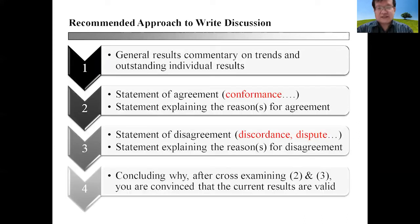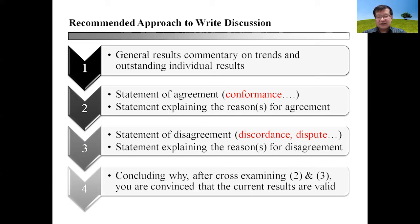So how do you write a discussion? This is a trial-and-tested method for students to write a discussion. There are four steps. The first step will be a general results commentary on trends and outstanding individual results. Remember, you are writing each of these for each point that you have already analyzed in your results. So every point of results will go through these four steps. If you go through these four steps, you can quickly have a paragraph comprising 50 to 60 words or even more.